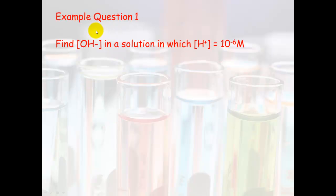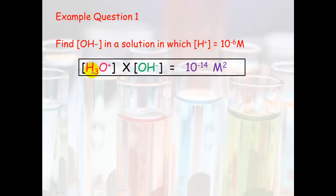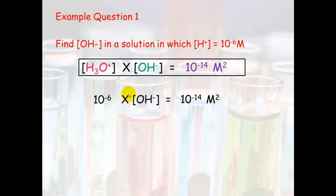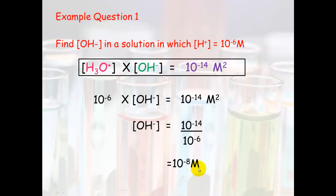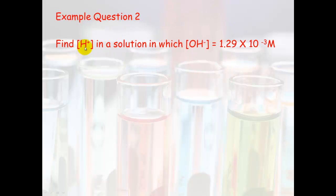Here's an example question: find the hydroxide concentration in a solution in which the hydrogen ion concentration is 10⁻⁶ M. We use the formula [H₃O⁺][OH⁻] = 10⁻¹⁴. The hydronium concentration equals 10⁻⁶, so we divide both sides: [OH⁻] = 10⁻¹⁴ ÷ 10⁻⁶ = 10⁻⁸ M.